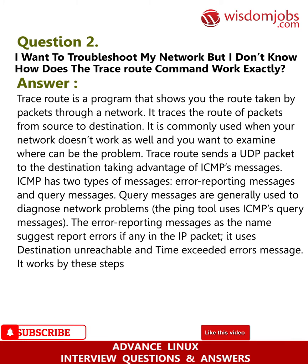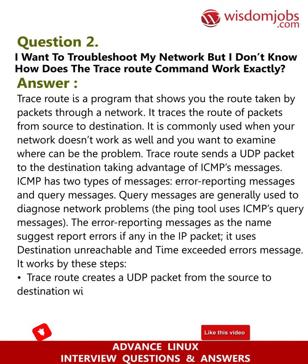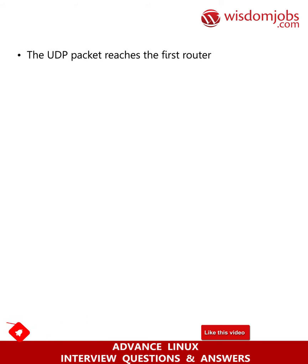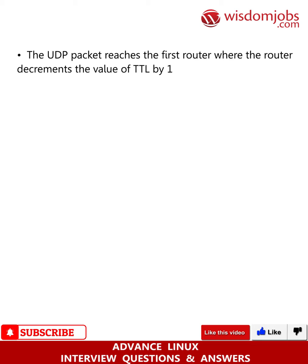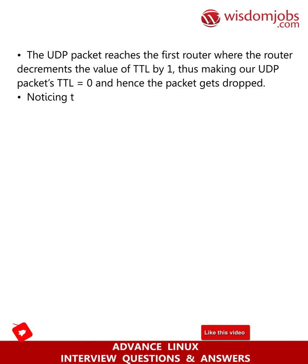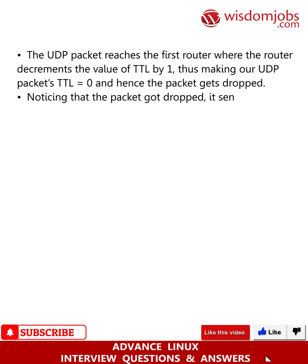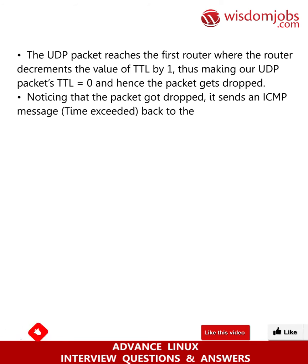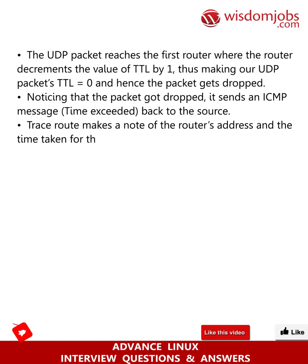It works by these steps: Traceroute creates a UDP packet from the source to destination with a TTL (time to live) equal to 1. The UDP packet reaches the first router, where the router decrements the value of TTL by 1, making the UDP packet's TTL equal to 0, and hence the packet gets dropped. Noticing that the packet got dropped, it sends an ICMP time exceeded message back to the source. Traceroute makes a note of the router's address and the time taken for the round trip.